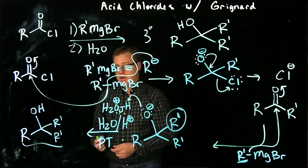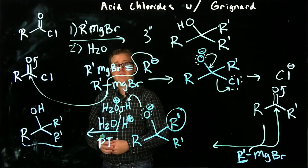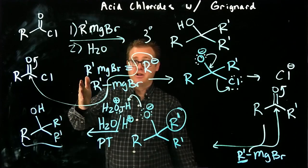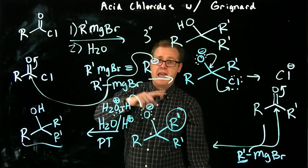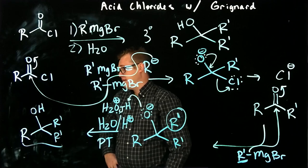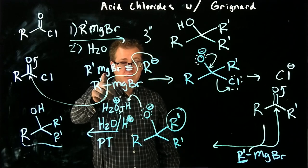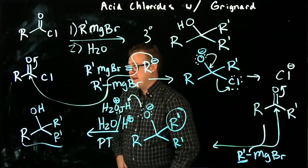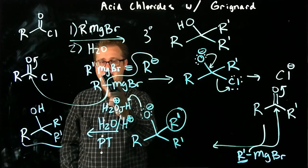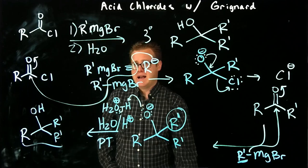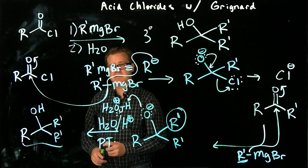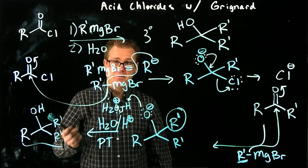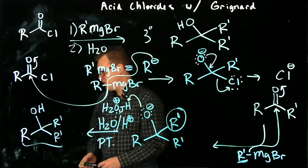The next reagent we're going to look at is called the Gilman reagent. What's similar between the Grignard and a Gilman is that they both use metals in the reagent. In a Gilman, you use copper instead of magnesium, and that's going to influence its reactivity slightly differently than the Grignard based on the metal being used.